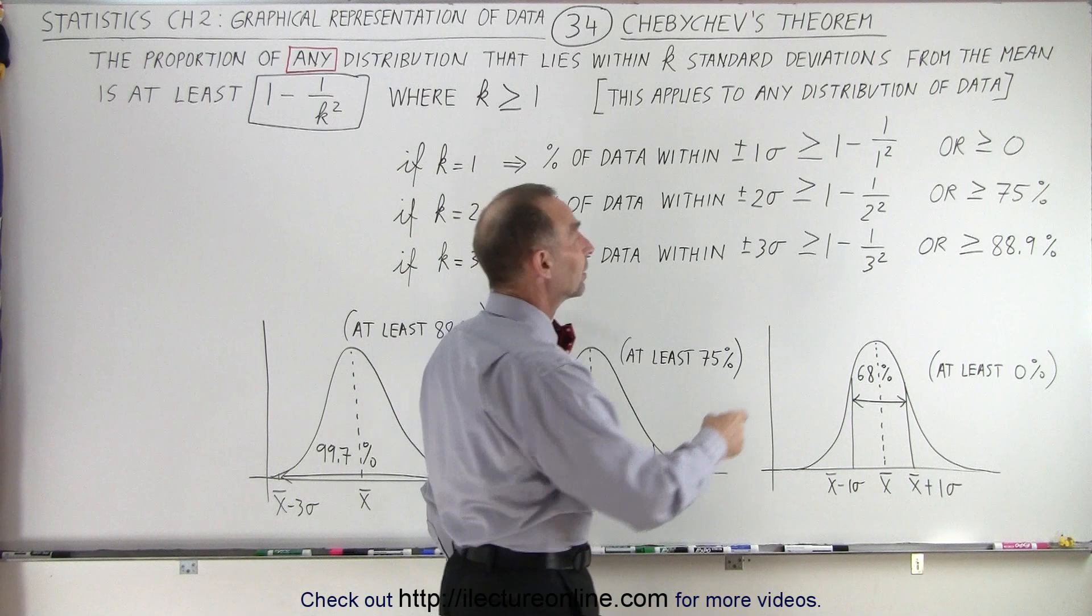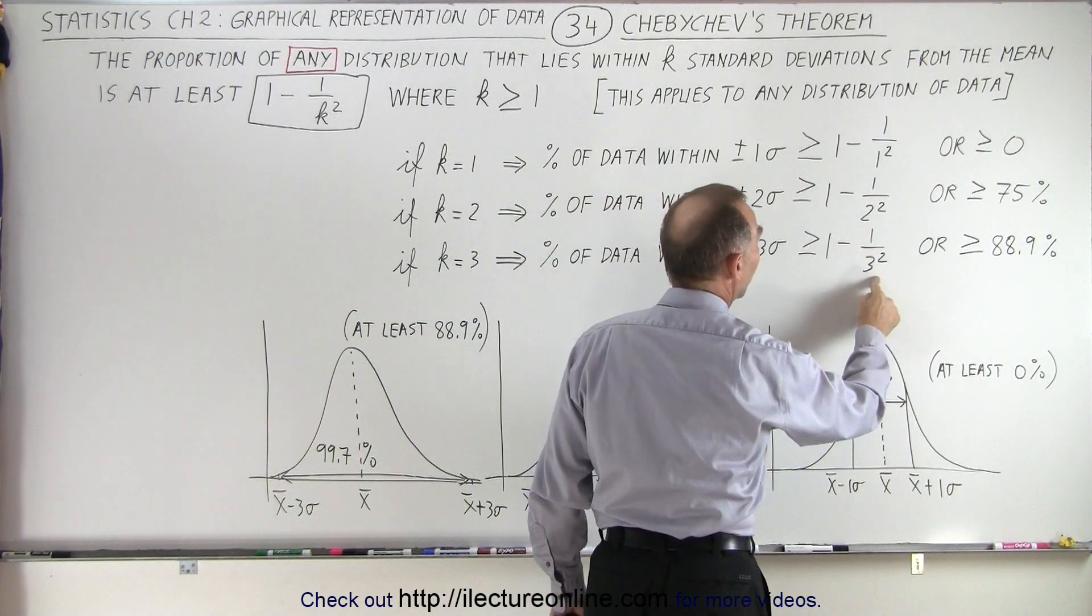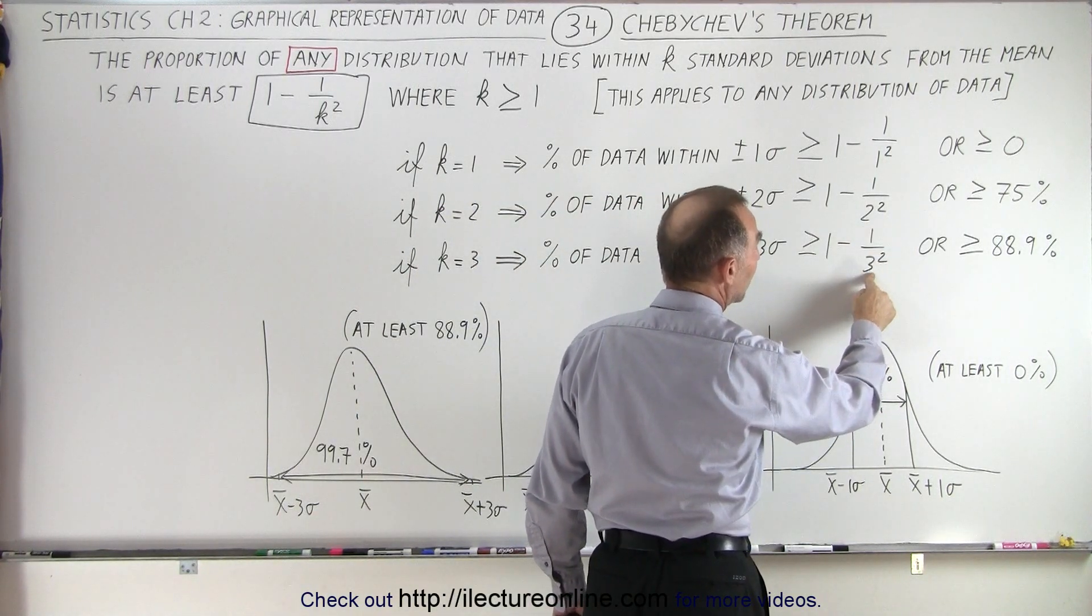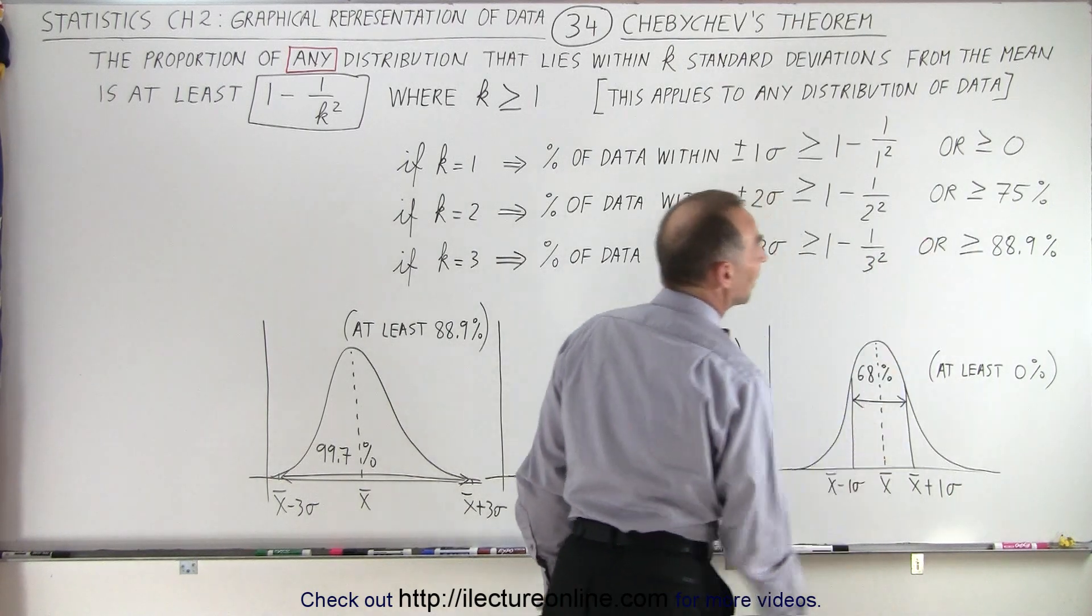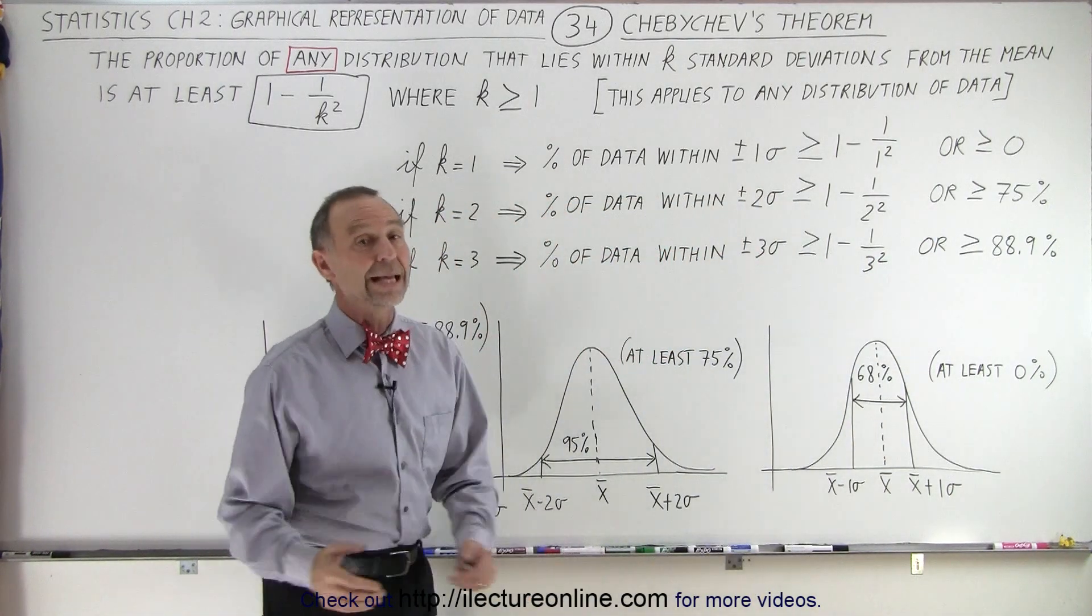And the way it's calculated, you calculate 1 - 1/k². In this case, if k is three, 1/3² = 1/9. One minus one over nine is 0.889 or 88.9%.